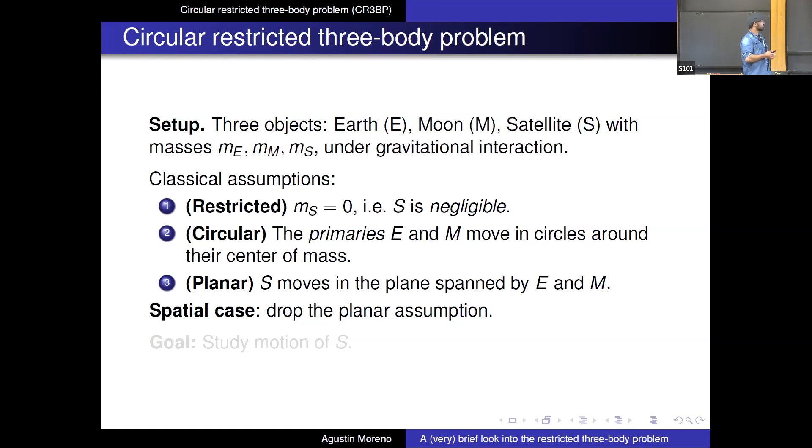There's also the circular case in which we assume that the primaries move in circles around their center of mass, as opposed to the more general situation in which to move in ellipses. This is basically a two-body problem already known to Newton. The planar case is when we assume that the satellite moves on the plane containing the Earth and the Moon, so we have some dimensional reduction in the problem. And the spatial case is when we drop the planar assumptions, so now the satellite is allowed to move anywhere it wants to in R3.